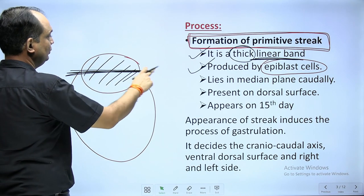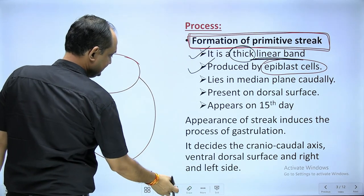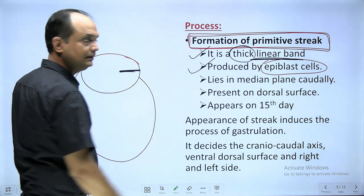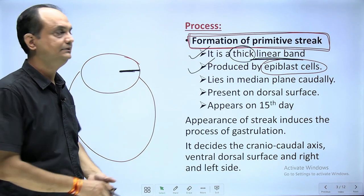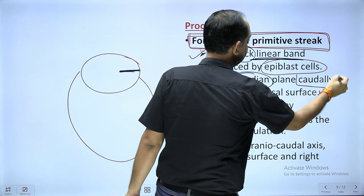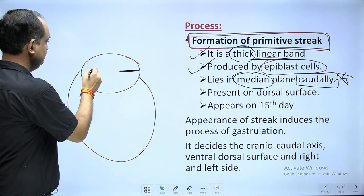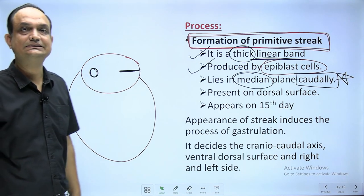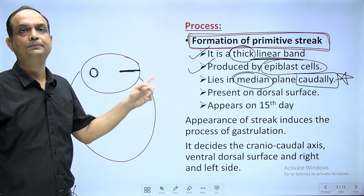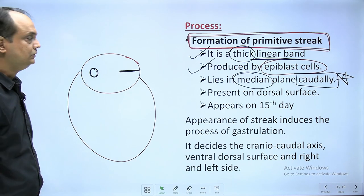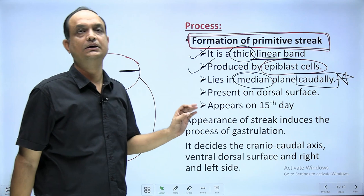In the midline, the primitive streak is not lying in the whole length — it forms in the caudal part of the disc. The word caudal is very important, because the primitive streak will not appear in the anterior part. In the anterior part, there is already a formation of pre-cordal plate in the second week, so it is not forming in the area of pre-cordal plate. On the opposite side of pre-cordal plate, the primitive streak will appear. This area is going to form your future mouth. That is why the primitive streak forms in the midline, but in the caudal area.